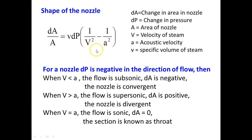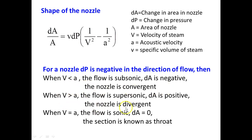When V is greater than A, the flow is supersonic and dA is positive — the nozzle is divergent. When V is less than A, it is a convergent nozzle. When V equals A, dA equals zero — this section is called the throat section, where there is no change in area. So subsonic flow gives a convergent nozzle, supersonic flow gives a divergent nozzle, and at the throat section V equals A, which is sonic flow.